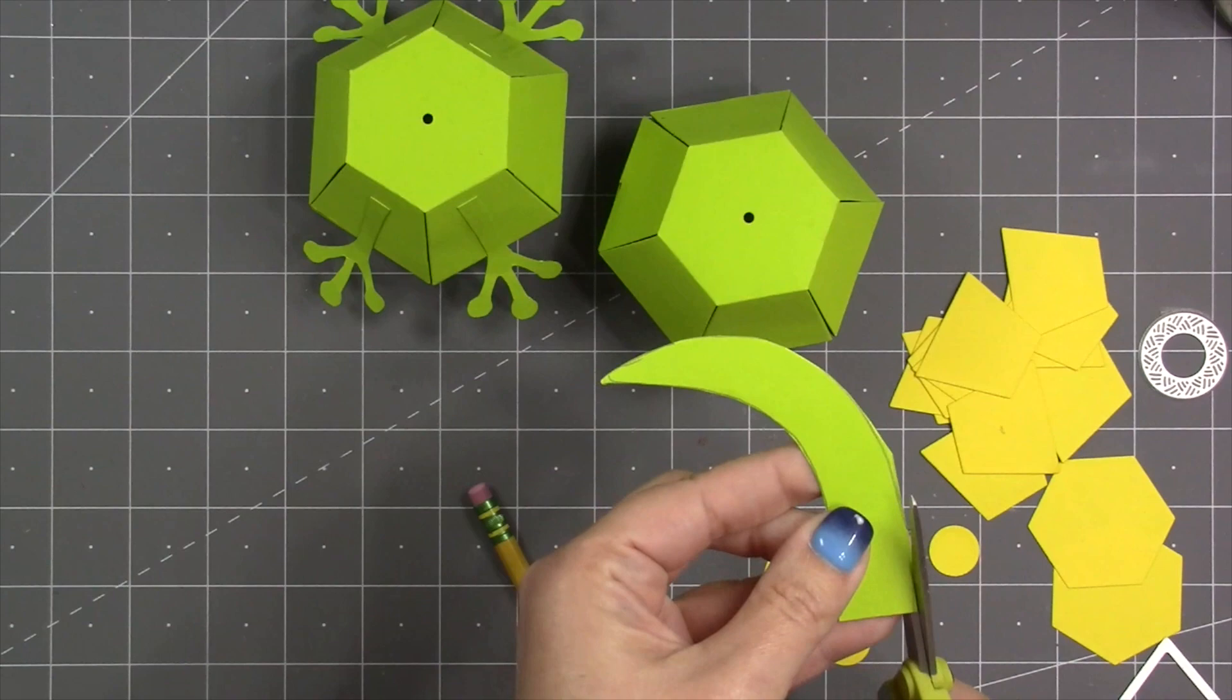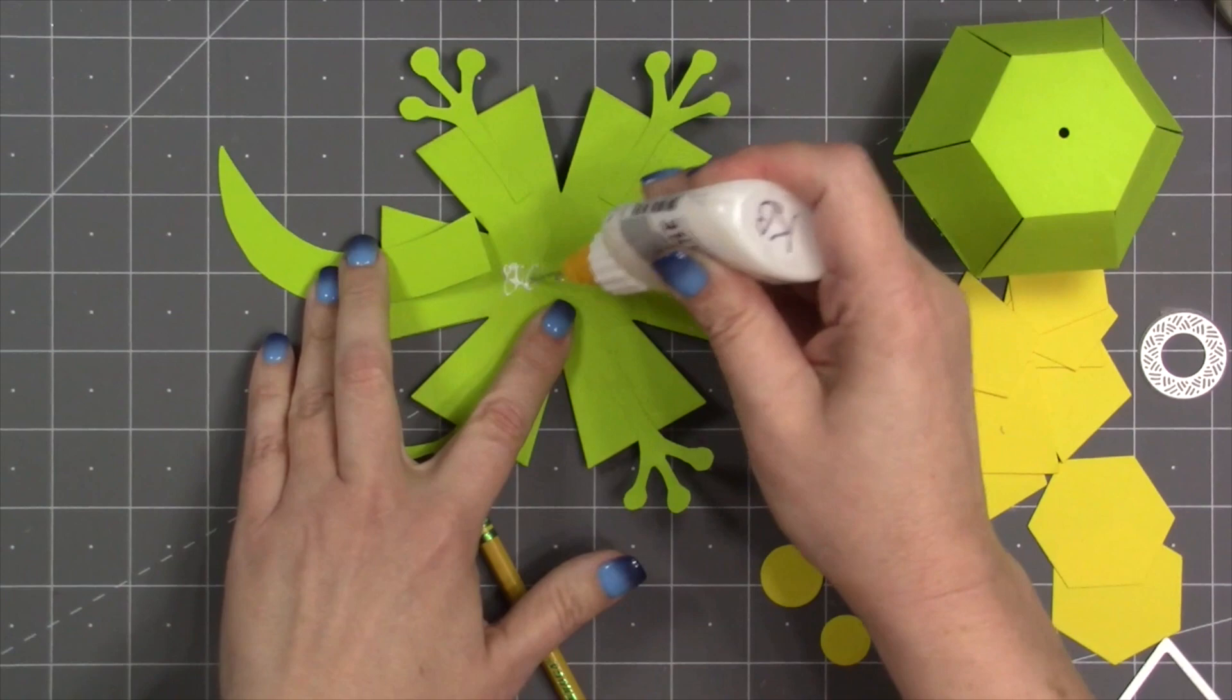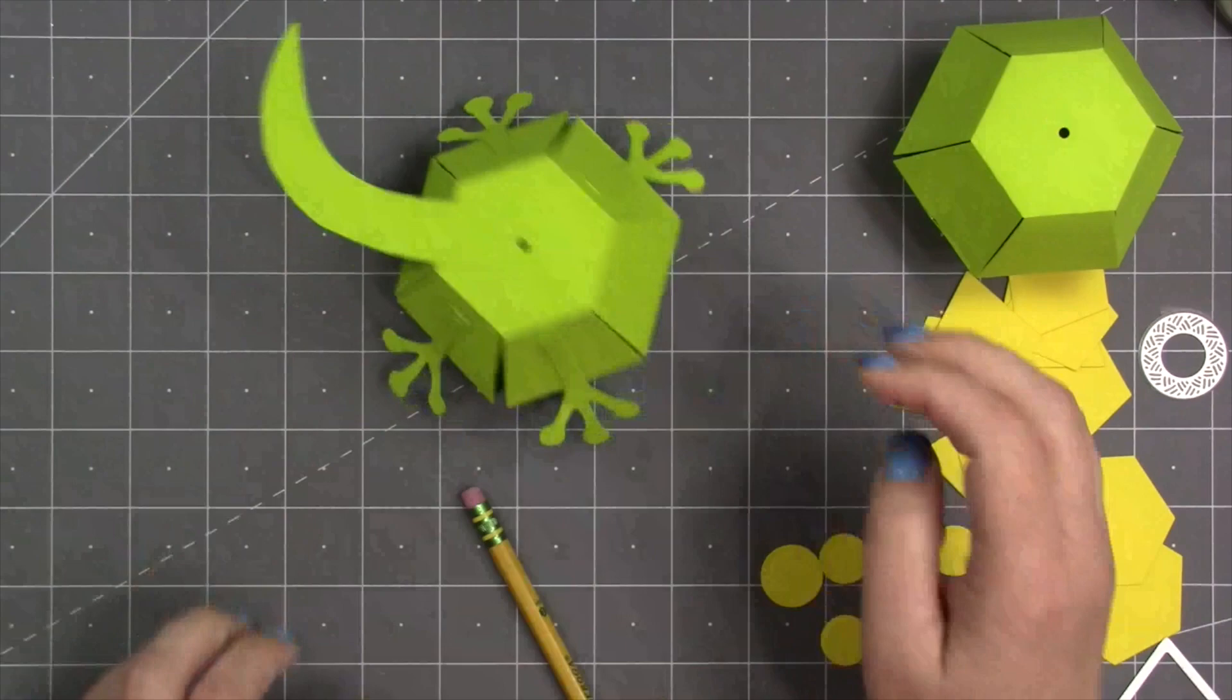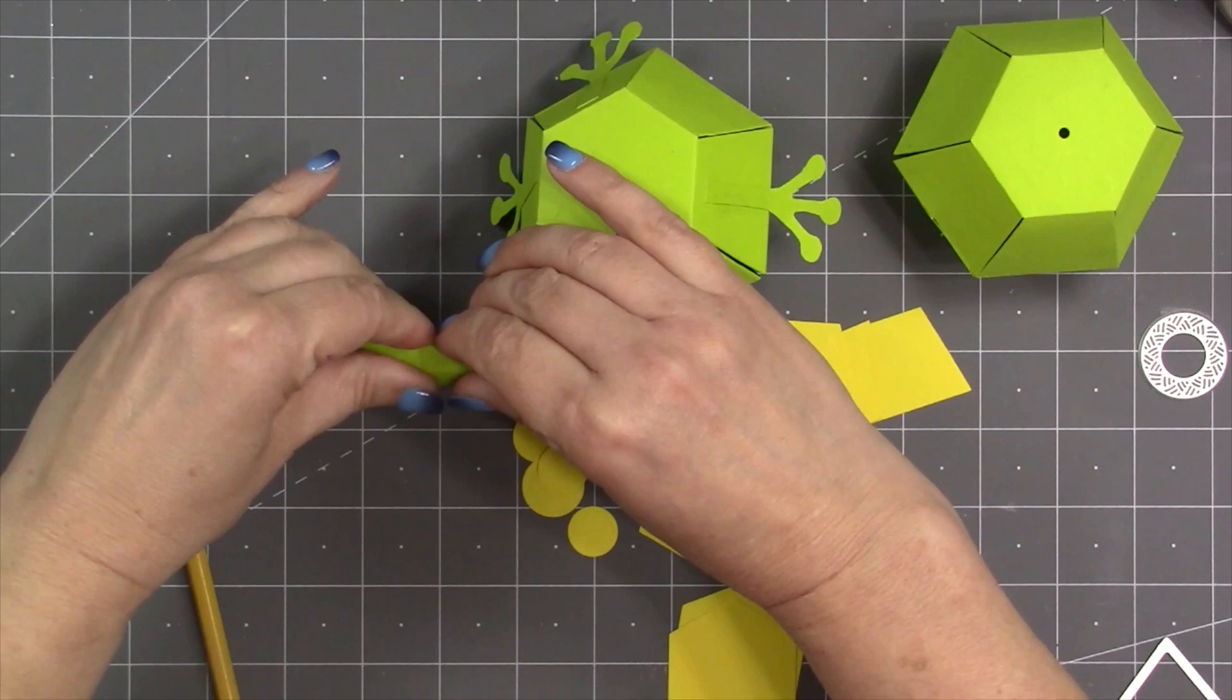Then I just freehand drew with a pencil again just a curved tail. Where that is going to go is up on top of the surprise ball, so that as it pops up the tail is up on top. Then I just went along the length of the tail, just kind of pinching it a little bit in the middle to give it some dimension.